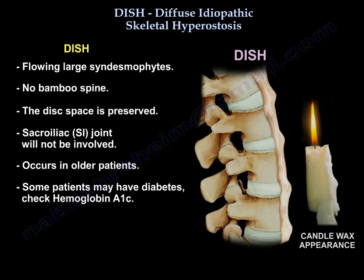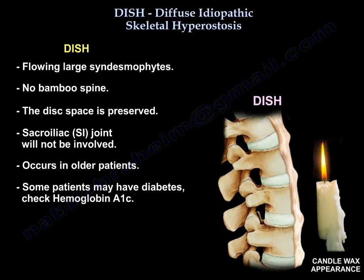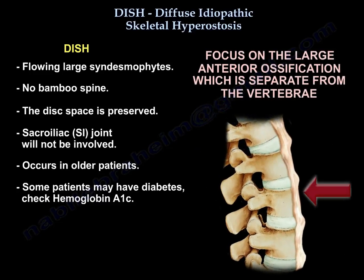In DISH, there is flowing large syndesmophytes. There is no bamboo spine. The disc space is preserved. There is no involvement of the SI joint. It occurs in older patients, some of whom may have diabetes with a high hemoglobin A1C. Focus on the large anterior ossification which is separate from the vertebrae.